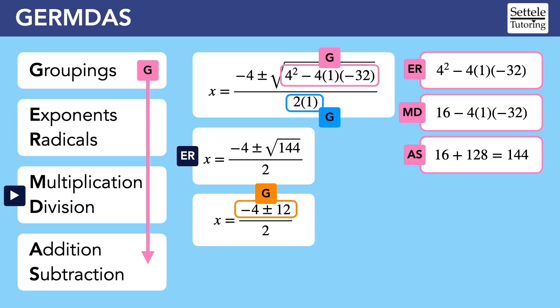We have to simplify that with its own mini GERMDAS first. Luckily this grouping is just simple addition and subtraction. You probably remember that the quadratic formula often splits into two separate equations. At this point we'll stop using the plus or minus symbol and instead break this apart into two equations for negative 4 plus 12 and negative 4 minus 12. The addition gives us 8 and negative 16.